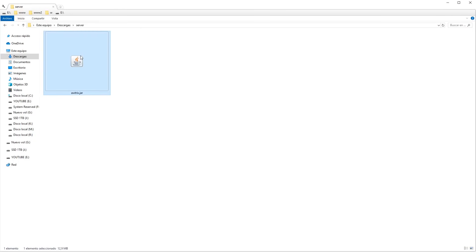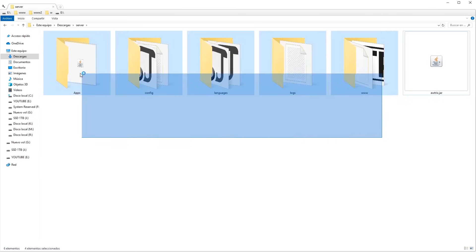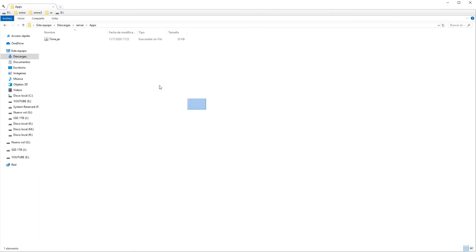Once that's working, we'll move on to another difficult thing. We download this file called awtrix.jar, which I also leave in the description. Running it on your PC creates these folders. The app's folder is crucial and will be discussed later.